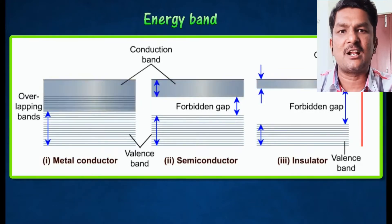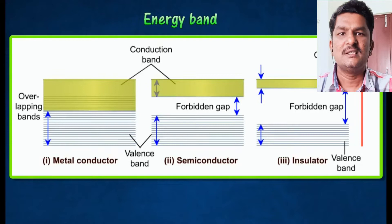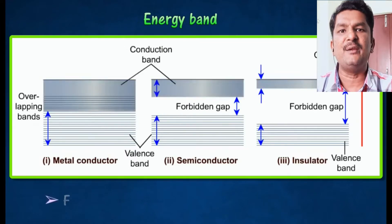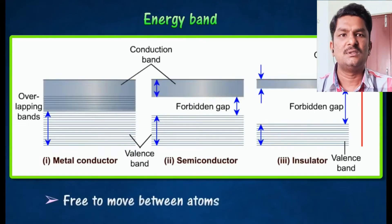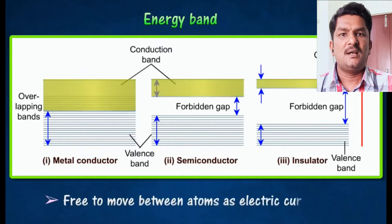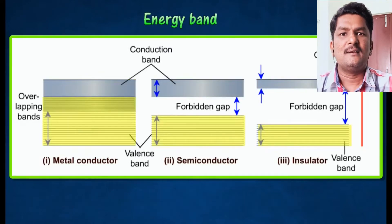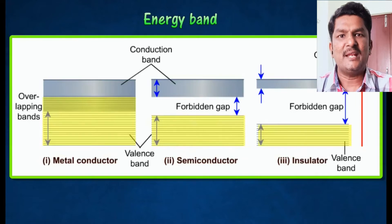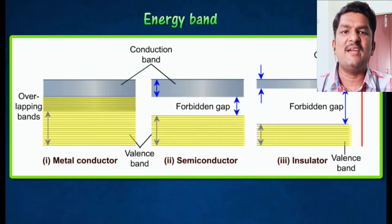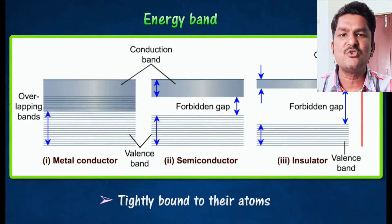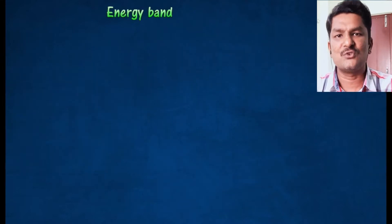Conduction electrons are free to move. The lower valence bands are occupied by valence electrons, and these valence electrons are tightly bound to the atoms, so they cannot move.